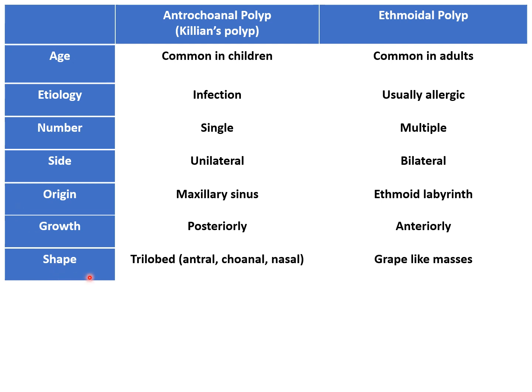Regarding the shape of the polyps, antrochoanal polyps are generally trilobed, having three different parts: the antral part, which is present in the maxillary antrum and is thin and stalk-like; the choanal part, which grows posteriorly into the choana and is round and globular; and the nasal part, which is present in the nose and is flat. Ethmoidal polyps are multiple small round grape-like masses.